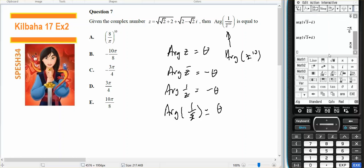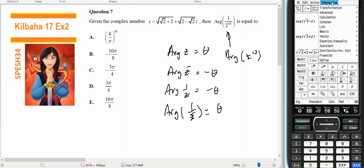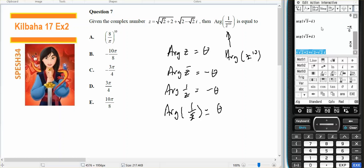I'm looking for its argument using the calculator. The complex argument is pi over 8.